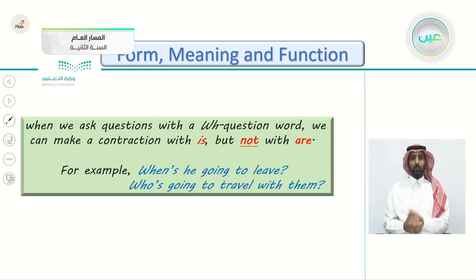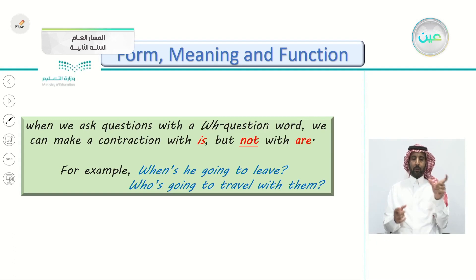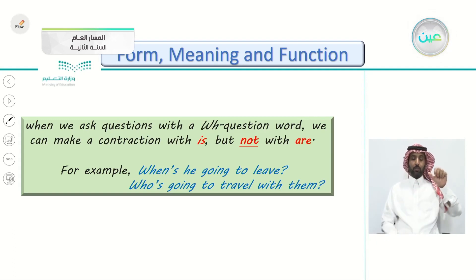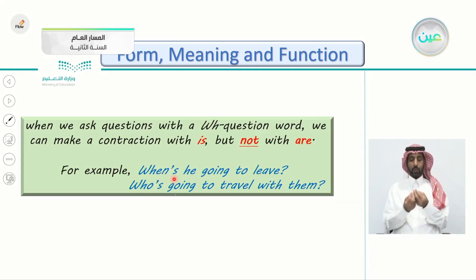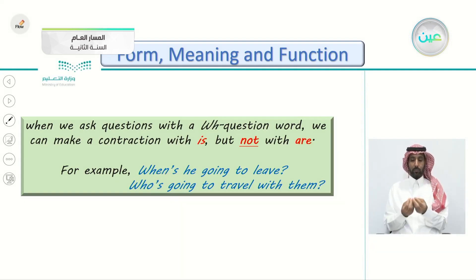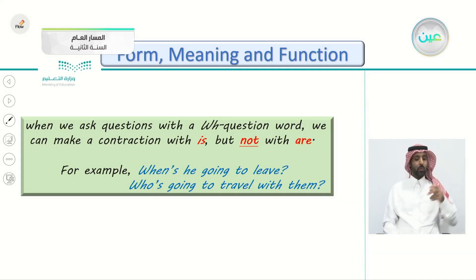When we ask questions with a WH question word, we can make a contraction with 'is,' but not with 'are.' For example, 'when is' becomes 'when's': 'When's he going to leave?' And 'who is' becomes 'who's': 'Who's going to travel with them?' You cannot use this contraction with 'are.'